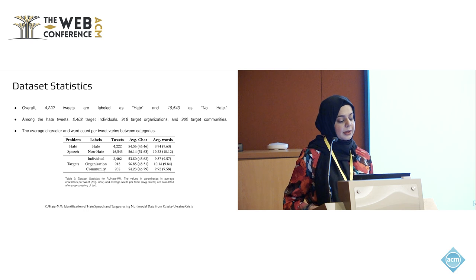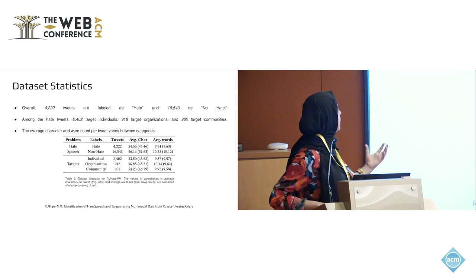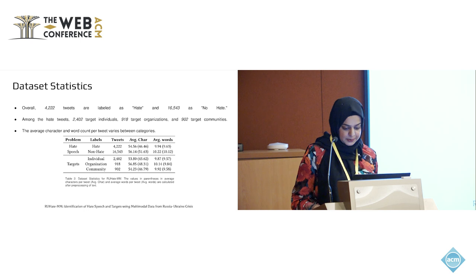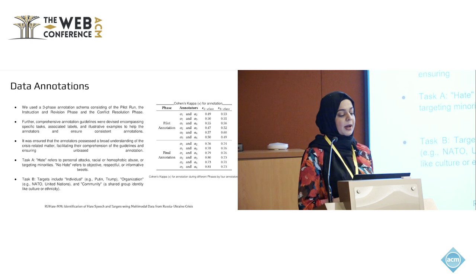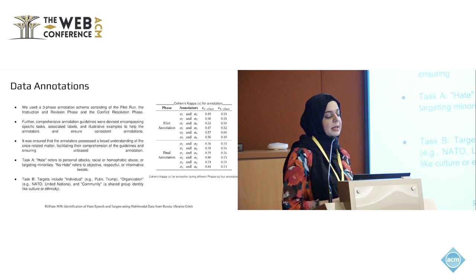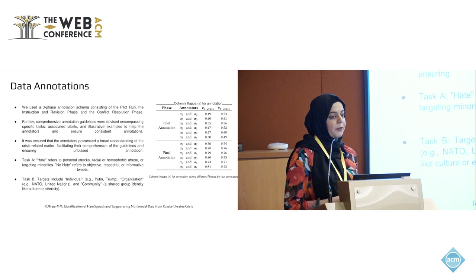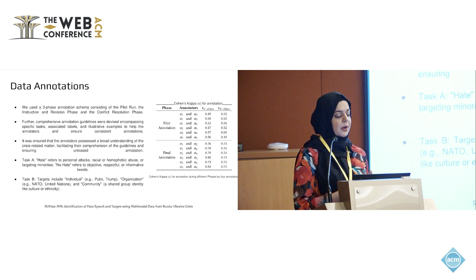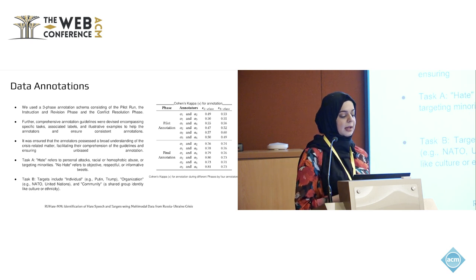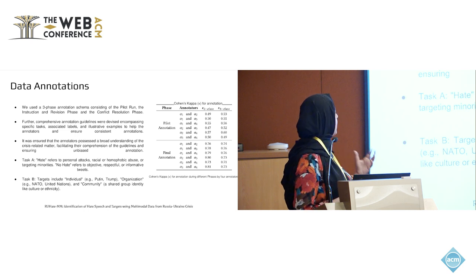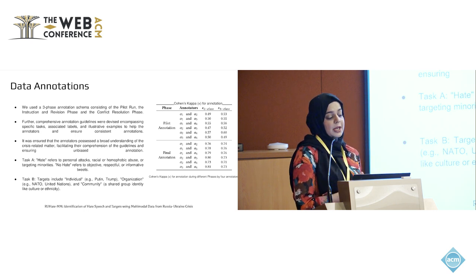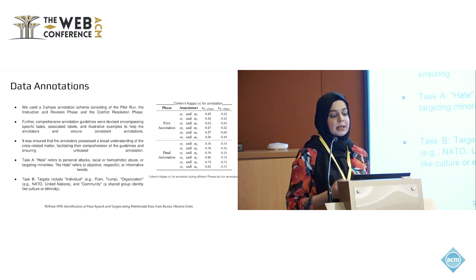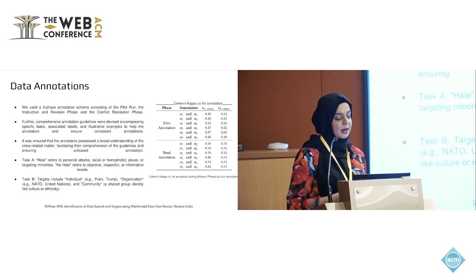The average character and word count per tweet varies between different categories, as shown in the table. We used a three-phase annotation schema consisting of the pilot run, the instruction revision phase, and the conflict resolution phase. Comprehensive annotation guidelines were devised encompassing specific tasks, associated labels, and illustrative examples to help the annotators and ensure consistent data annotations. It was ensured that annotators possessed a broad understanding of the crisis-related matter, facilitating their comprehension of the guidelines and ensuring unbiased annotation.